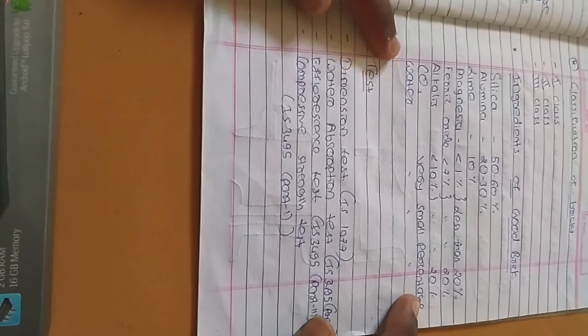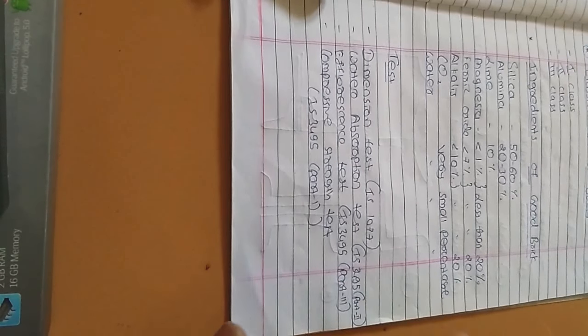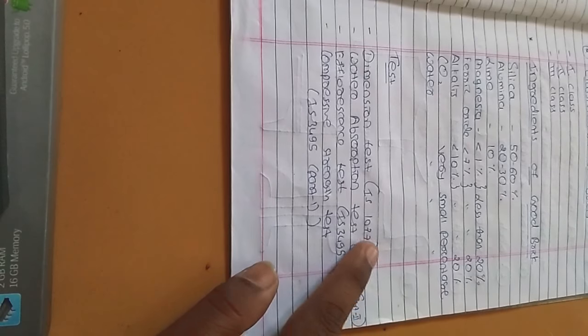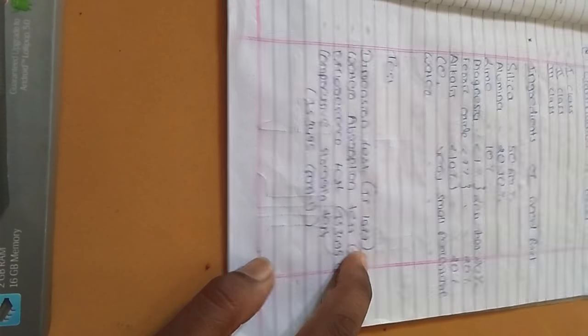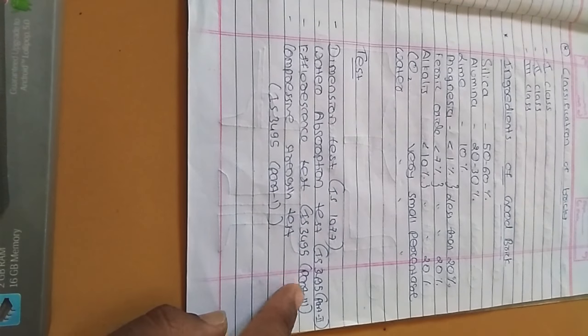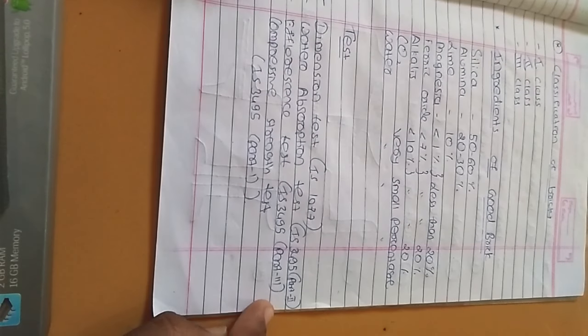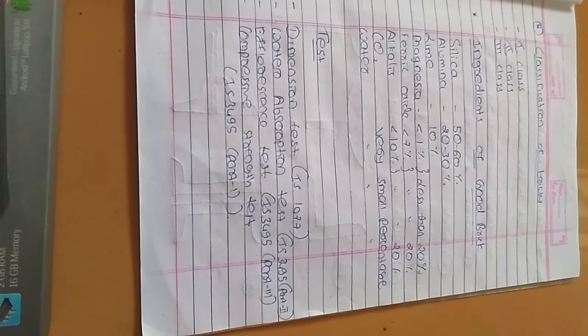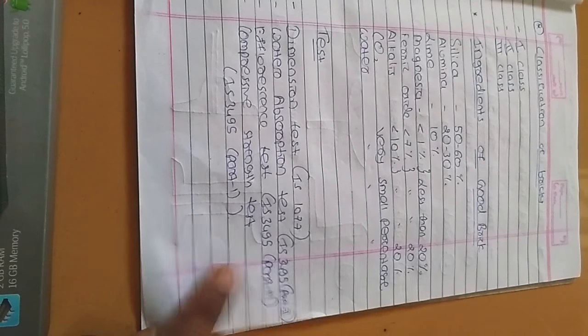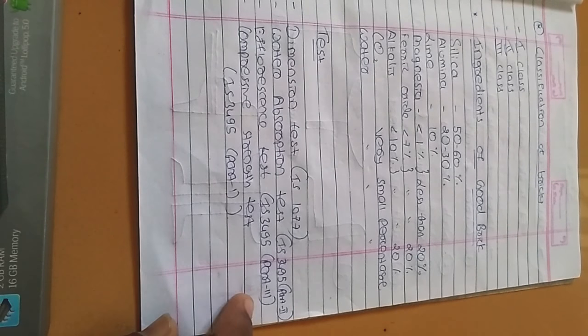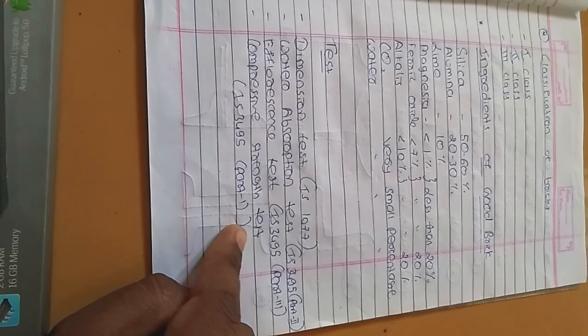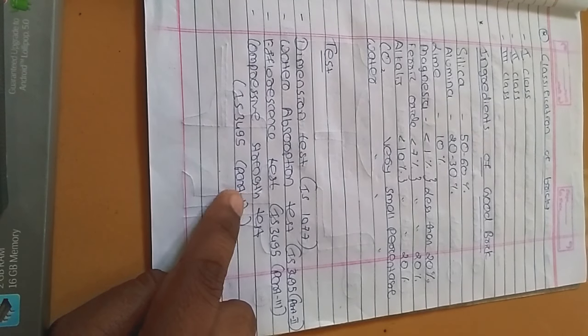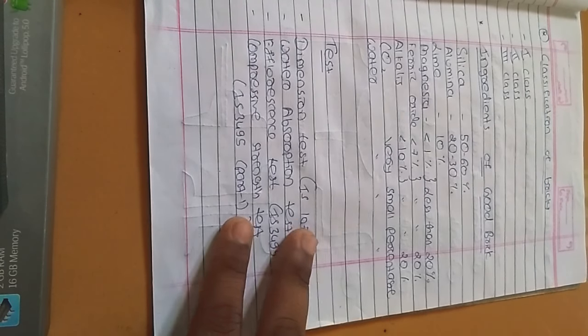Now the tests for bricks: dimension test according to IS 1077, water absorption test according to IS 3495 part 2, efflorescence test according to IS 3495 part 3, compressive strength test according to IS 3495 part 1. These are the code books. You can search for bricks test.